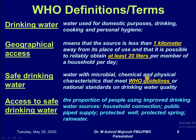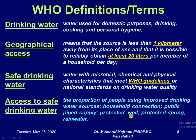Either the country's water standards should be met or the WHO guidelines must be met. Access to safe drinking water refers to the proportion of people using improved drinking water sources: household connections, public pipe supplies, protected wells, protected springs, and rain water. It is stressed that wells, springs, or rain water must be protected to be included in the category of access to safe drinking water.